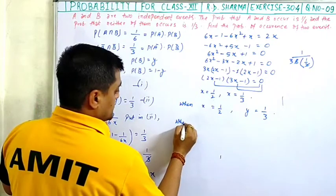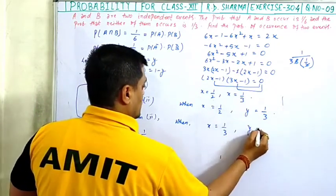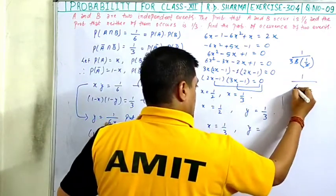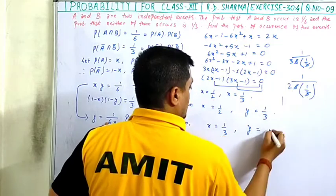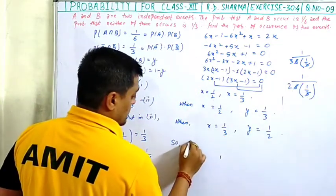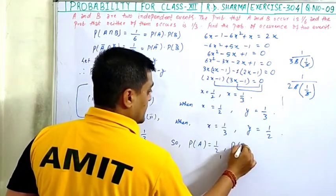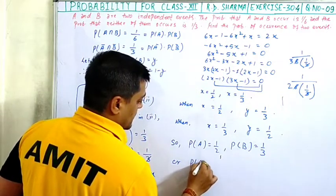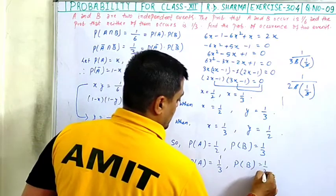Solving: x equals 1 upon 2 or x equals 1 upon 3. Using xy equals 1 upon 6: if x equals 1 upon 2, then y equals 1 upon 3; and if x equals 1 upon 3, then y equals 1 upon 2. So probability of A equals 1 upon 2 and probability of B equals 1 upon 3, or probability of A equals 1 upon 3 and probability of B equals 1 upon 2.